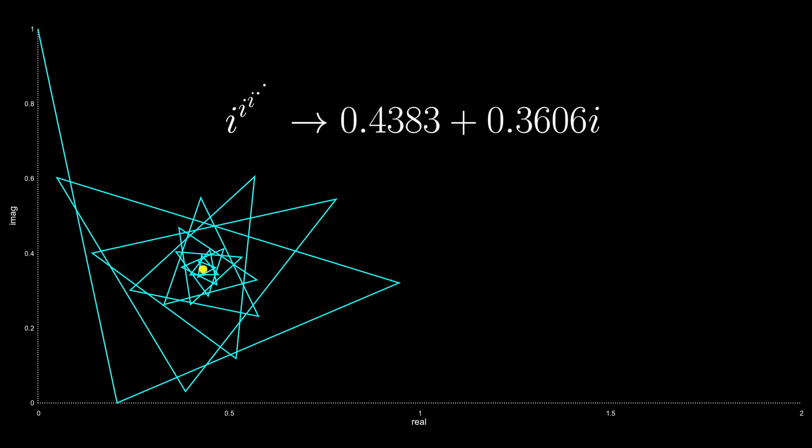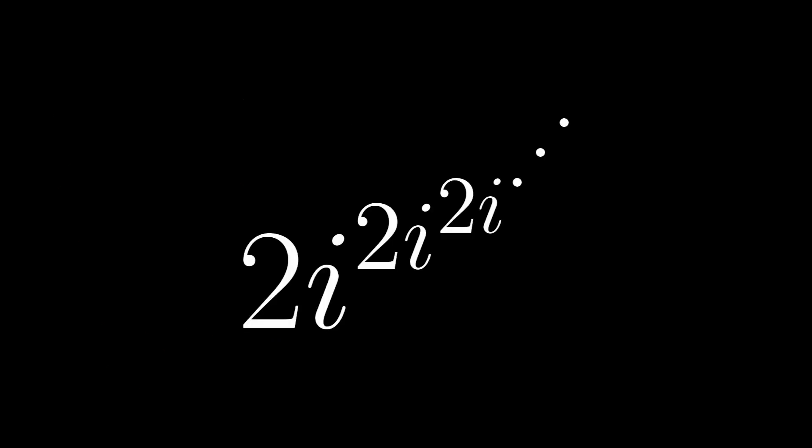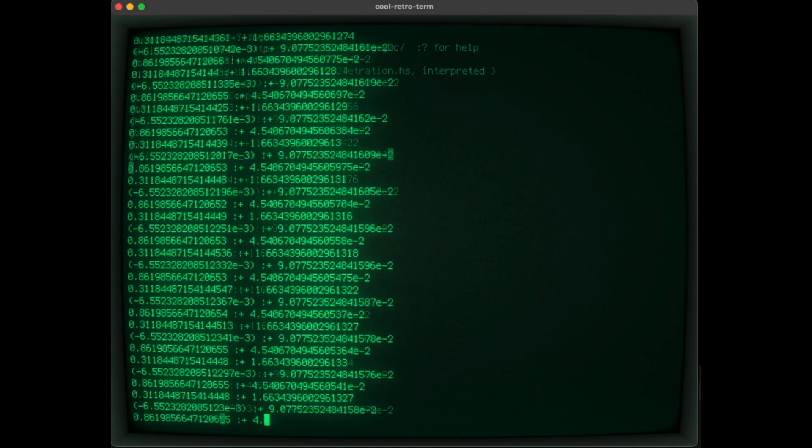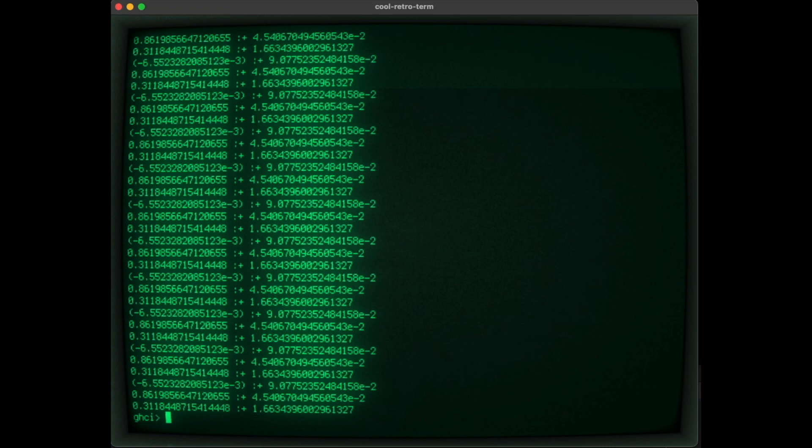But for some others, it converges to a repeating cycle. One such case is 2i, or 2 times the imaginary constant. If we compute its Tetrations up to 1000, we see that it settles into a cycle of 3 numbers.